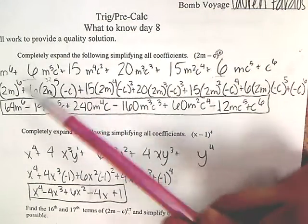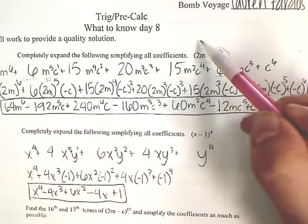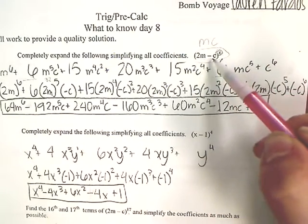Alright, so first we're just expanding this equation right here, just pretending it's m and c instead of 2m and negative c.